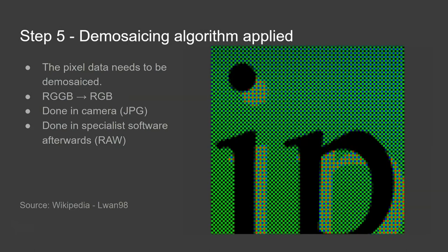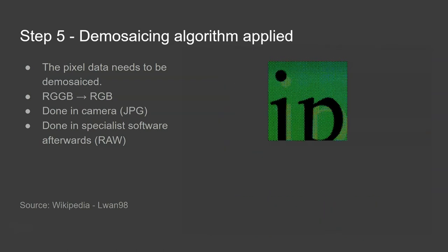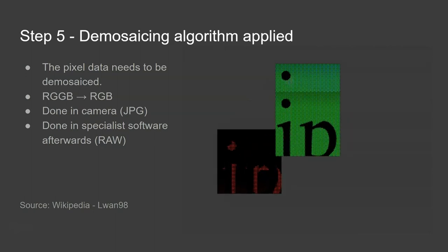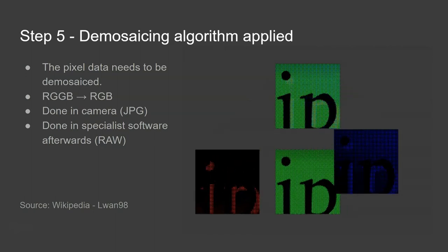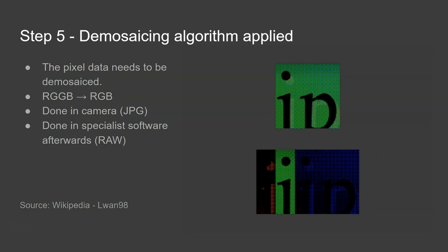Step five, demosaicing. So as we mentioned earlier twice as many green as red and blue pixels are recorded and what we need to do now is we need to take those three separate recordings with twice as many green and red and blue and we need to combine those together to make the final image. This is known as demosaicing.